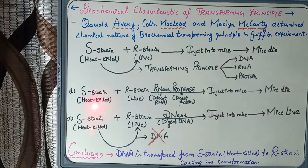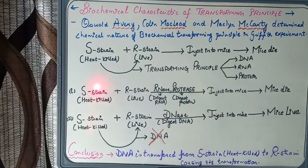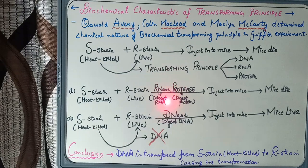Heat-killed S strain plus live R strain was introduced into mice, but now along with these two strains, enzymes were also introduced. In the first step, they introduced RNase enzyme and protease enzyme along with the heat-killed S and live R strains and injected this into mice. The mice died as usual — RNase digested RNA and protease digested protein, but nothing changed and mice died.